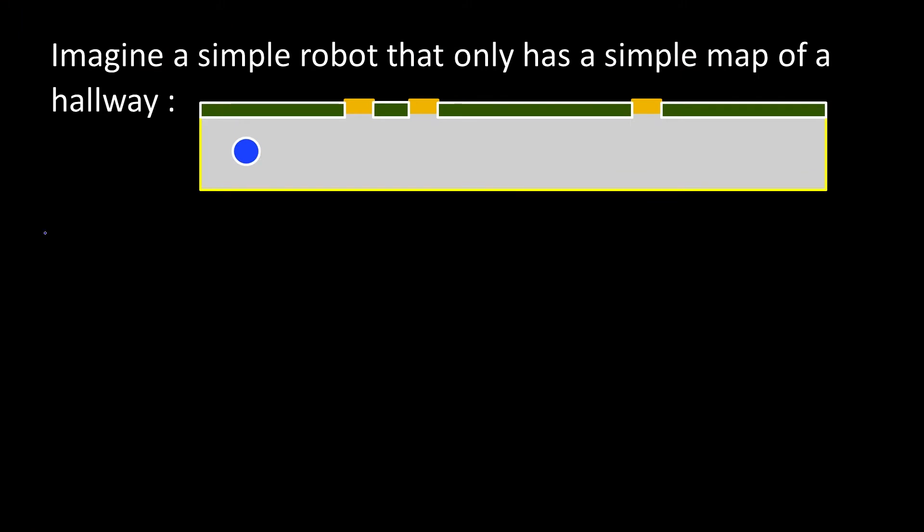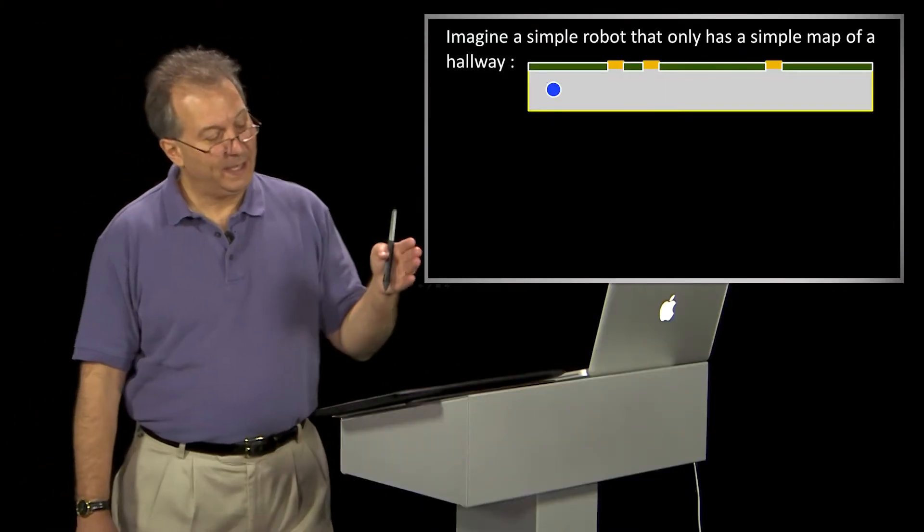And by the way, this little blue dot here, this is the robot. The robot doesn't actually know where it is. We know where it is because we're really smart. Or we work for the NSA. I hope that didn't cost me my grant. Anyway,